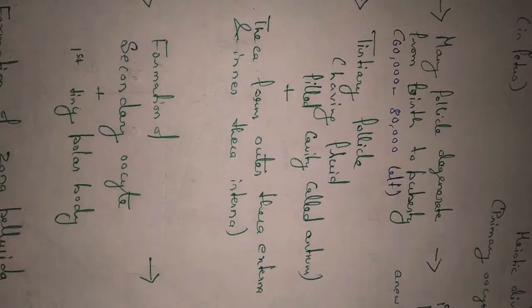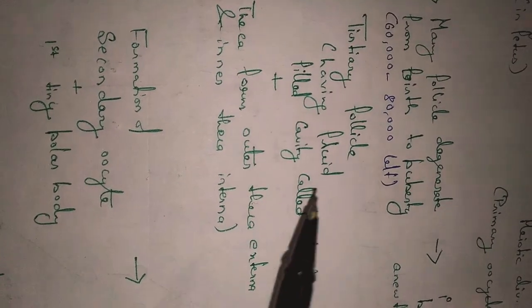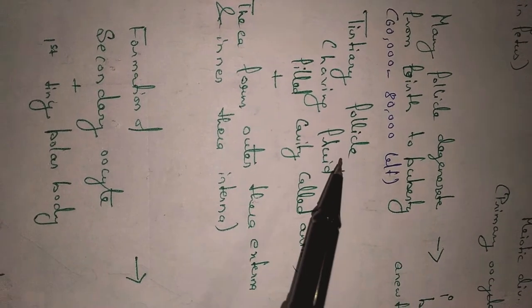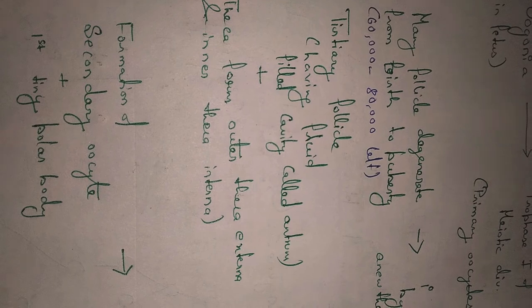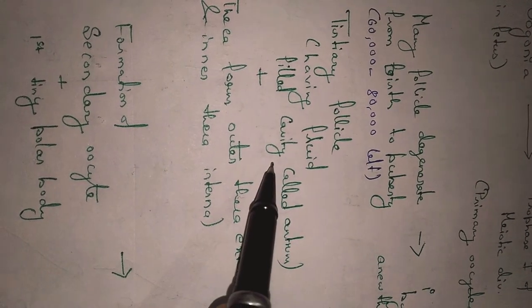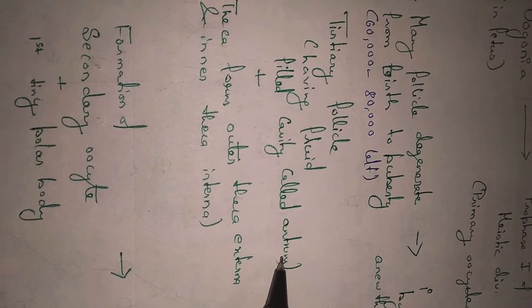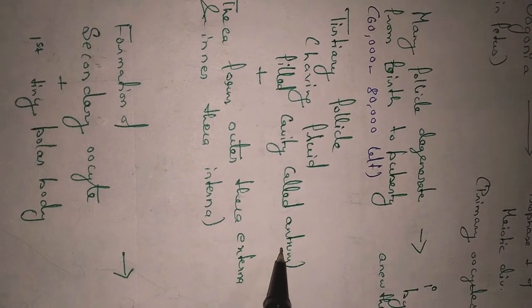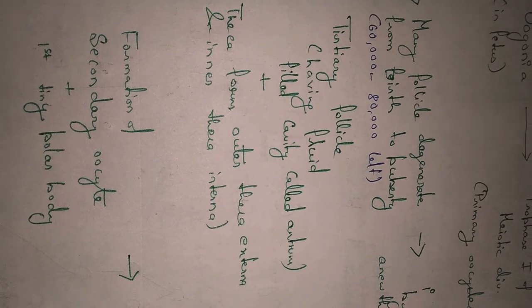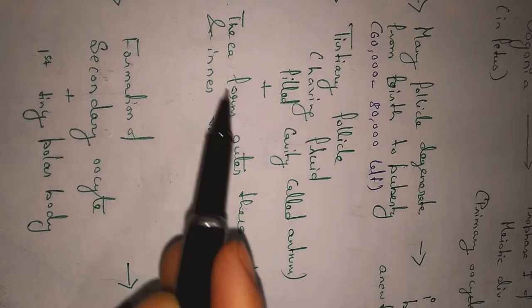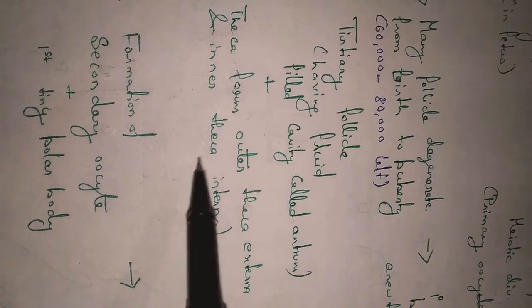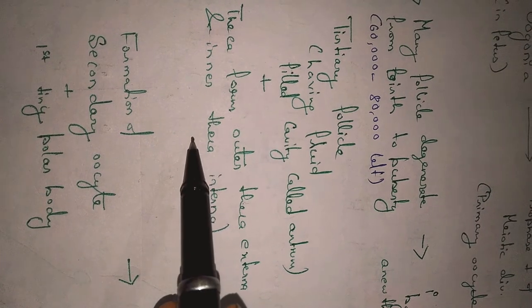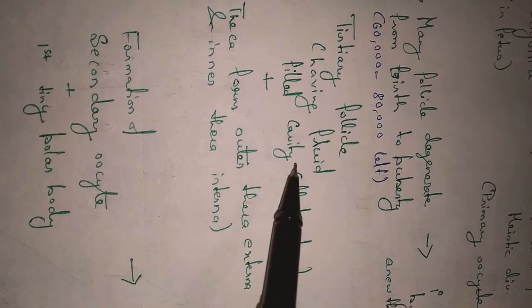The next stage is the tertiary follicle. The tertiary follicle is a fluid-filled structure where a fluid-filled cavity called the antrum is present. Apart from the antrum, the tertiary follicle has two layers: an outer layer called the theca externa and an inner layer called the theca interna.